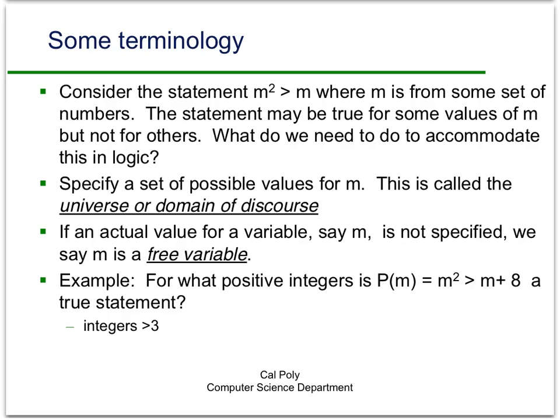Consider a statement like m squared greater than m, where m is from some set of numbers. As with all propositional functions, it might be true for some values of m but not others. To be precise, we need to specify what the possible values for m are — and we call that the universe or domain of discourse. This corresponds to the domain of a function in high school math.